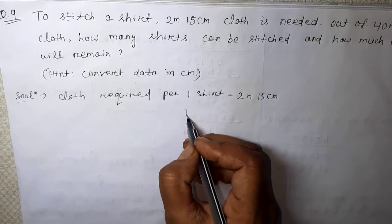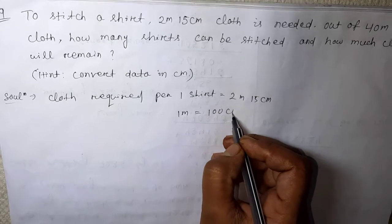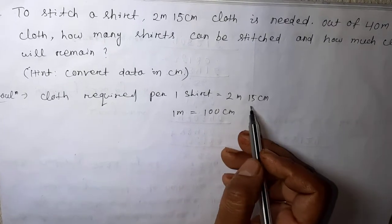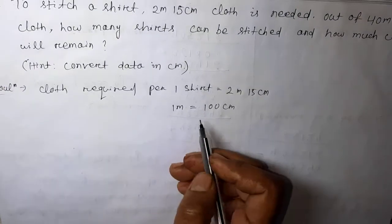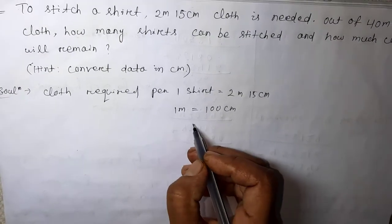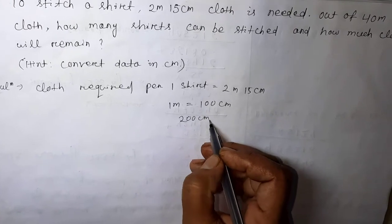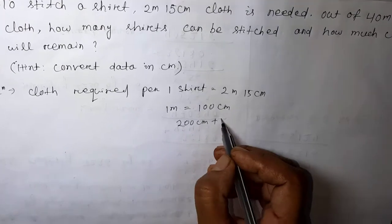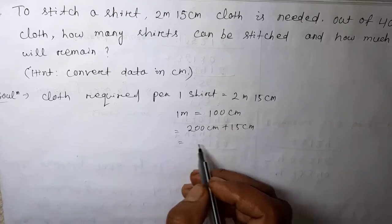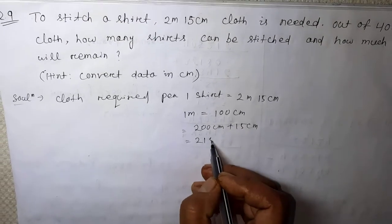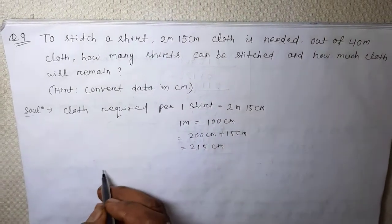1 meter is equal to 100 centimeter. So 2 meter 15 centimeter equals 200 centimeter plus 15 centimeter, which is 215 centimeter. Then the cloth we have...